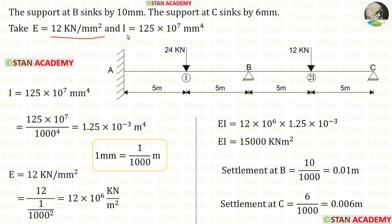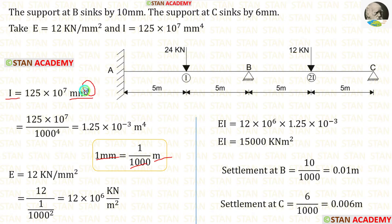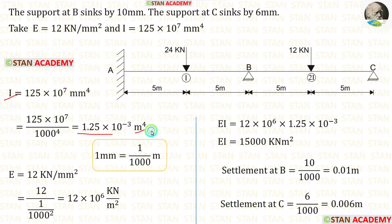The moment of inertia I is given as 125 × 10⁷ mm⁴. Since it is given in mm⁴, we need to convert it to m⁴. We know that 1 mm = 1/1000 m, and since we have power 4, we divide this value by 1000⁴. Finally, we get the moment of inertia in m⁴.